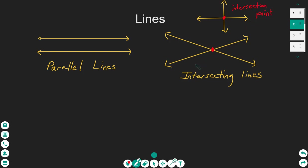Moving on, if we think about intersecting lines, intersecting lines form what's called angles. If we look at either one of these two intersecting lines, we can say that there are angles formed. This would be one angle — it's just the direction that these lines leave the intersecting point. We could also see another angle here, and another angle here, and even an angle here. So when we have two intersecting lines, we actually create four different angles.